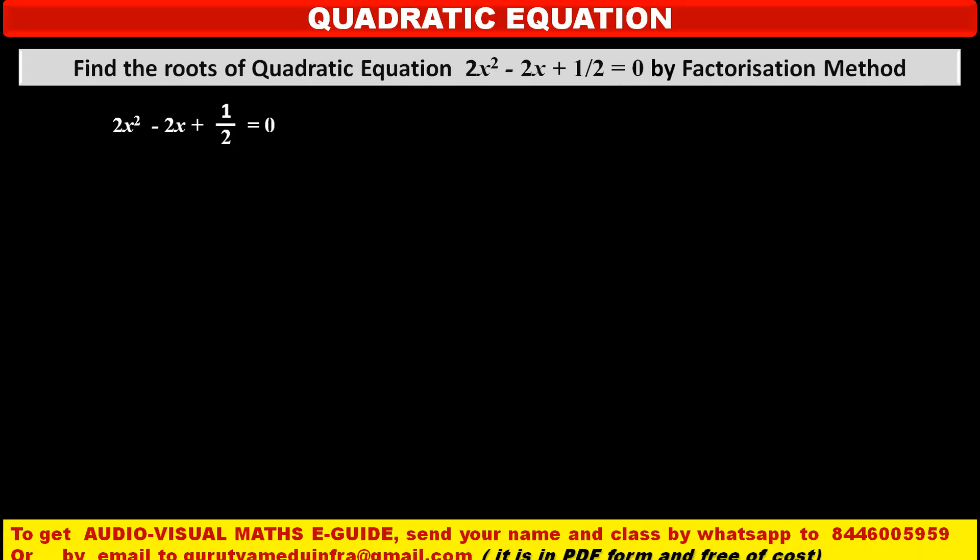Now, see, the given quadratic equation is 2x² - 2x + 1/2 = 0.